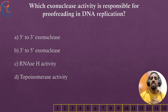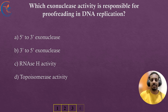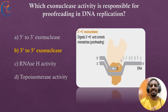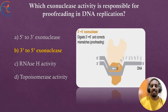The next question: which exonuclease activity is responsible for proofreading in DNA replication? The correct answer is 3' to 5' exonuclease. This 3' to 5' exonuclease activity allows DNA polymerases to remove incorrectly paired nucleotides, ensuring high fidelity in replication.